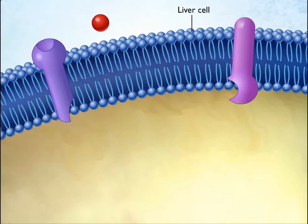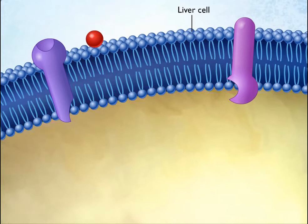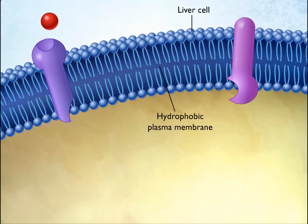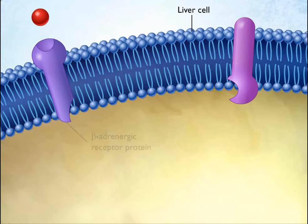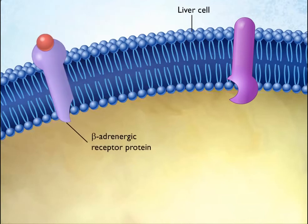Epinephrine is one of many hormones that is water-soluble and hydrophilic, and therefore unable to cross the hydrophobic plasma membranes of its target cells. Instead, it binds to receptor proteins located in the plasma membrane and does not enter the cell.